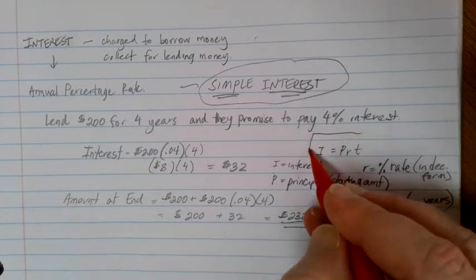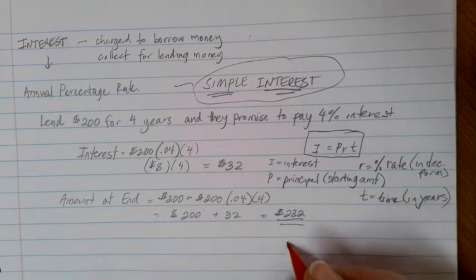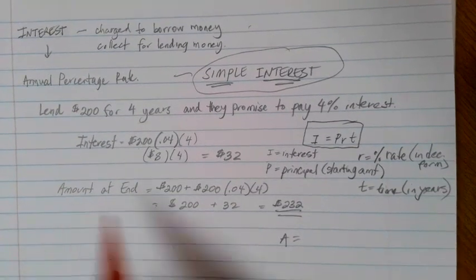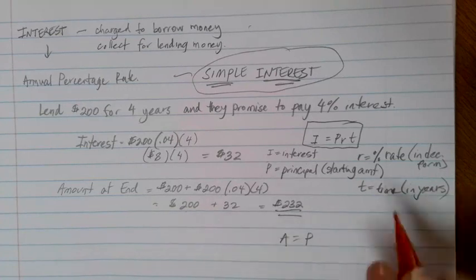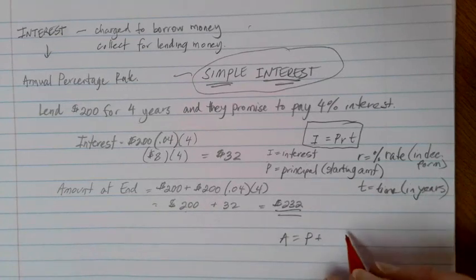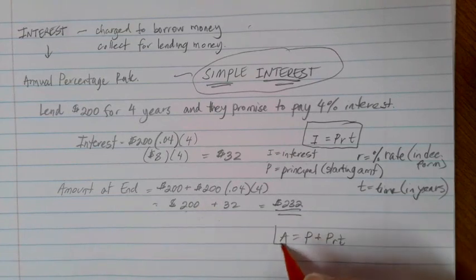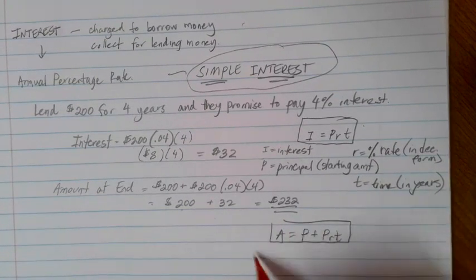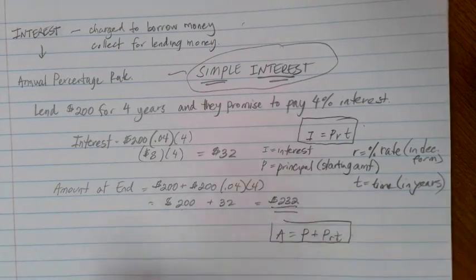So this is the interest version of the formula. We also have another version of the formula here that will give us the total amount at the end in our account. A is going to be equal to basically that starting amount, whatever the initial principal investment was, and then we're going to add the interest on top of that. So depending on if you're only interested in the interest or if you're interested in the final amount altogether, you're going to use one of these two formulas.